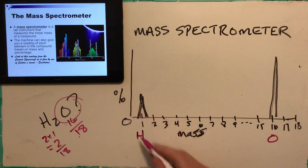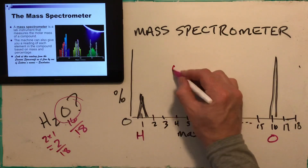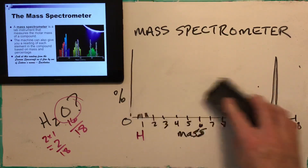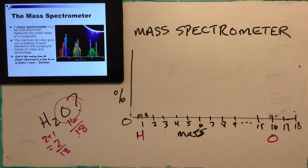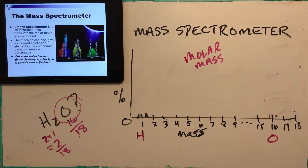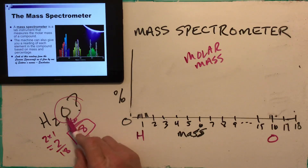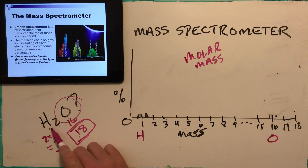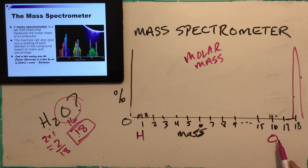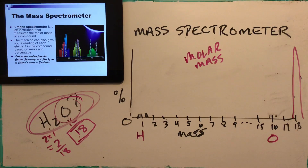I can determine a formula using the percent composition. The mass spectrometer gives us the percent composition — here are the elements, we use the mass to determine the components, and here's the percent. The mass spectrometer can also be set to go by molar mass. For water the molar mass is 18, so it'll put a spike there at 18. By using both sets of data — the elements with their percentages, and the molar mass of 18 — I can figure out that the formula of the compound is water.